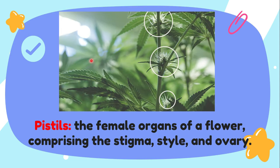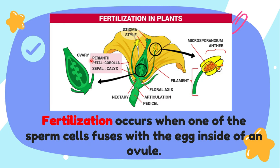We also have the pistils. It is the female organ of a flower, encompassing the stigma, style, and ovary. This is like the mom of the flowers. When we are talking about fertilization, we need to have two parts — the mom and the dad.